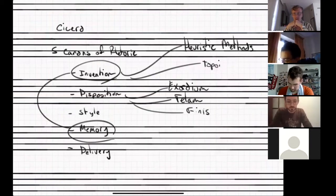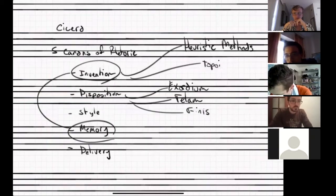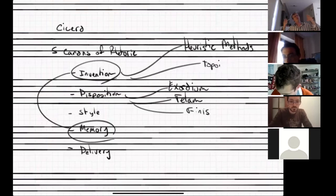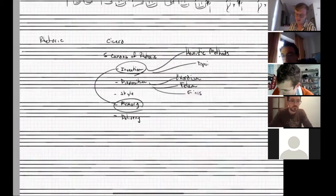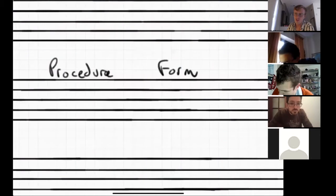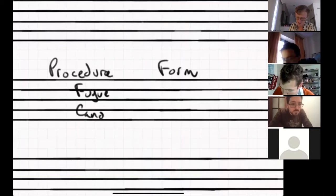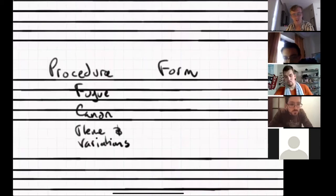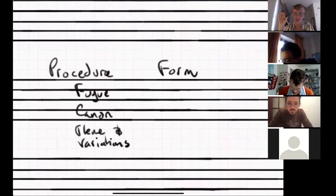A student asks about the difference between disposition and form. The instructor says this opens a can of worms. There are two categories in music: procedure and form. Procedures are things like the fugue, the canon, and theme and variations — they are not forms, they are procedures. A procedure is simply a process that we submit musical material to.